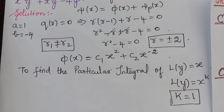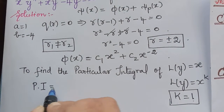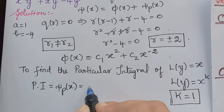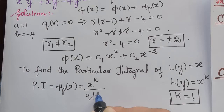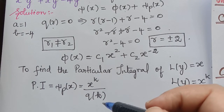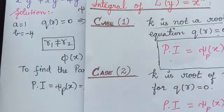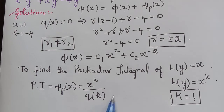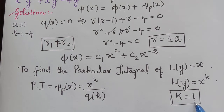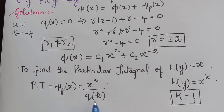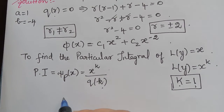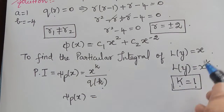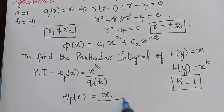When k is not a root of the indicial polynomial, the particular integral is given by ξₚ(x) = x to the power k divided by q(k). Kindly follow the previous video where cases 1 through 4 are explained in detail. With k = 1, the particular integral is ξₚ(x) = x divided by q(1).